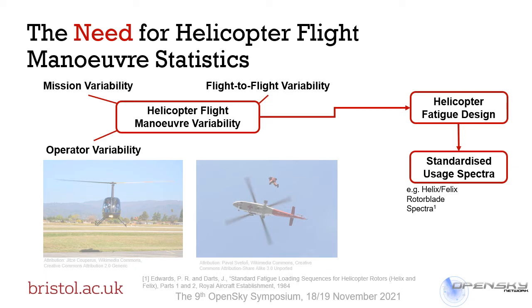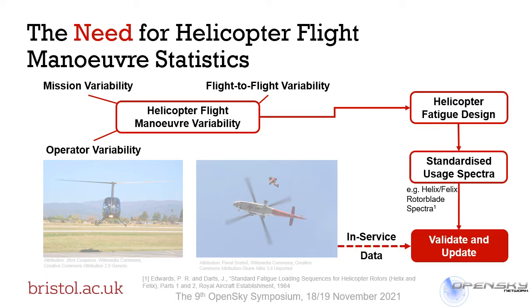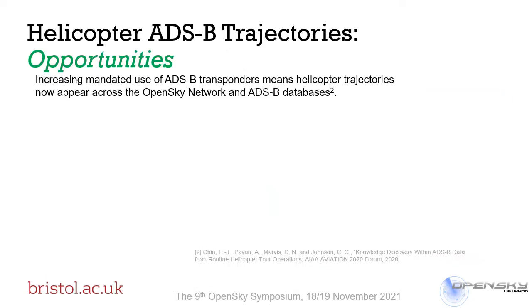Because of all this variability that we see in helicopter operations, we are often reliant on standardised usage spectra that describe the manoeuvres our helicopters perform — an example being the Helix-Felix spectra for rotor loads. What we need is significant amounts of in-service data to help us validate these assumed design spectra and also update them to make them more representative for future design cases. The increasing and mandated use of ADS-B transponders means that helicopter trajectories are now appearing more commonly across various ADS-B databases including the OpenSky Network.